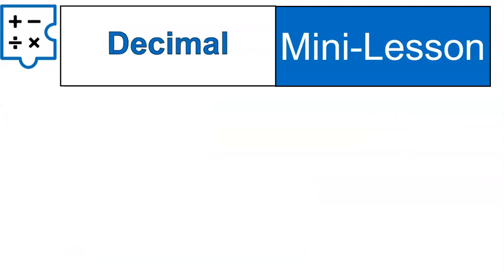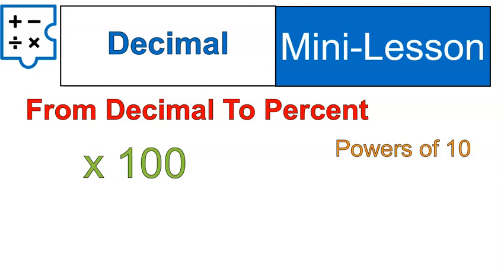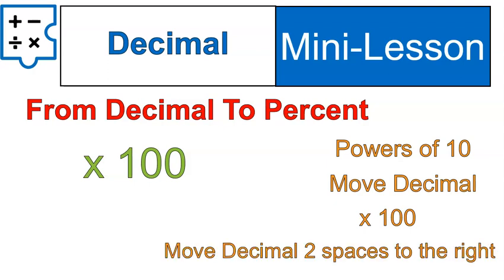Now we're going to go the other direction. We're going to convert from a decimal to a percent. To do this, you multiply times 100. Or in other words, if we remember our lesson on powers of 10, we will move the decimal two spaces to the right. So we're going in the opposite direction, basically doing the same thing, only in the opposite direction. That kind of makes sense, right? When we convert from a percent to a decimal, we move the decimal two places to the left. When we convert from decimal to percent, two places to the right.